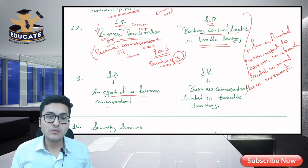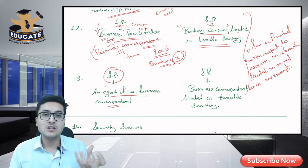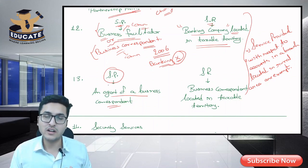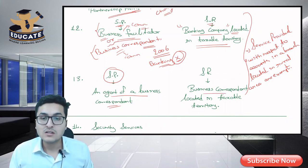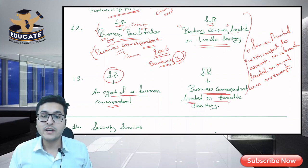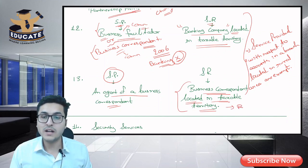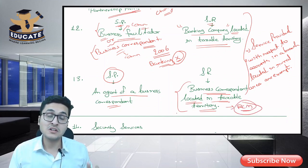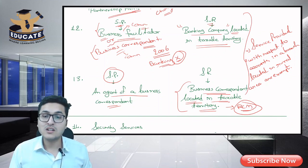Next: agent of a business correspondent. Service provider is an agent of a business correspondent; service receiver is the business correspondent located in taxable territory. If the business correspondent has appointed sub-agents, those agents provide service to the business correspondent. In that case, the business correspondent pays RCM tax to the government. The business correspondent must take compulsory registration under Section 24, since they are paying tax under reverse charge.